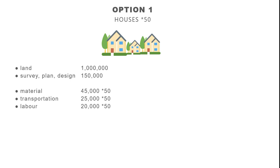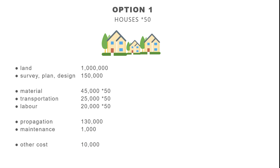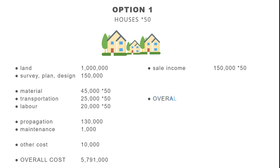Moreover, costs continue after construction. As a real estate firm, you may advertise through public media such as TV ads and a showplace at the agency — the promotion cost is €130,000. Maintenance cost before the houses are sold is €1,000, and other potential costs including tax are estimated at €10,000. So the total cost for option one is about €5.8 million. The average selling price is €150,000, and for 50 houses that gives a benefit of €7.5 million.